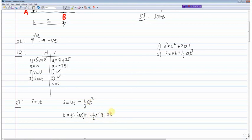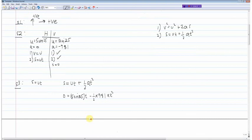We can see here we can take out t as a factor. So we can say t times five sine 25 minus 4.91 t squared.